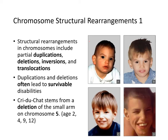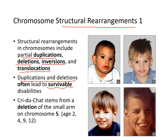Some diseases arise from chromosomal structural rearrangements, including partial duplications, deletions, inversions, and translocations. Duplications and deletions often lead to survivable disabilities. Cri-du-chat syndrome stems from deletion of a small arm segment on chromosome 5, and a child with this syndrome is shown at ages 2, 4, 9, and 12.